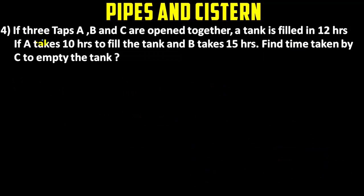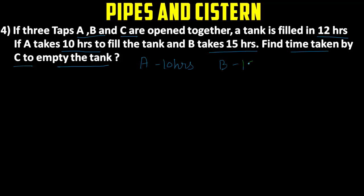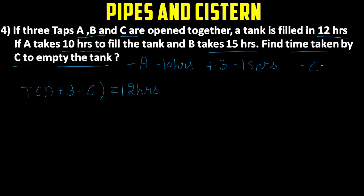The fourth question: if three taps A, B, and C are opened together, a tank is filled in 12 hours. A takes 10 hours to fill the tank and B takes 15 hours. Find the time taken by C to empty the tank. A and B are filling so they get positive signs; C is emptying so it gets a negative sign. Time taken by A+B−C = 12 hours. The formula is: A×B×C divided by (−AB + BC + CA) = 12.